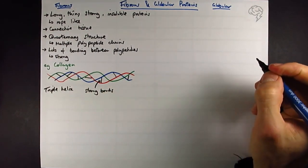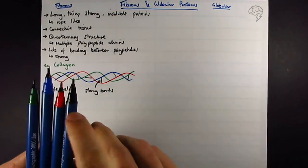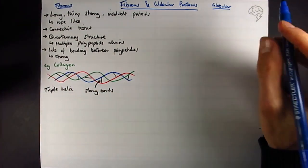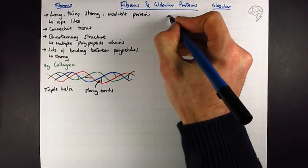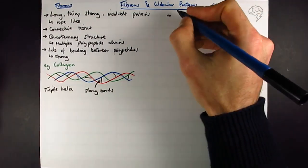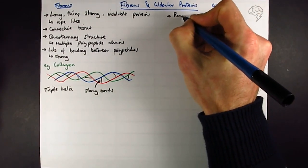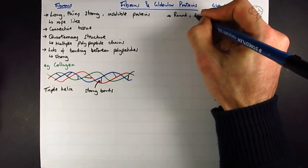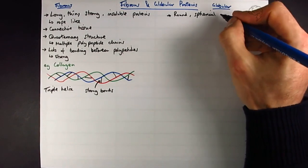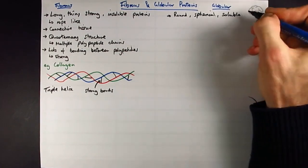Now looking at globular proteins, the classic example is hemoglobin. But let's look at the general features of a globular protein first. These are round, compact, also quaternary structure proteins. I should really say spherical, not perfectly spherical but spherical in general shape. These are soluble proteins.